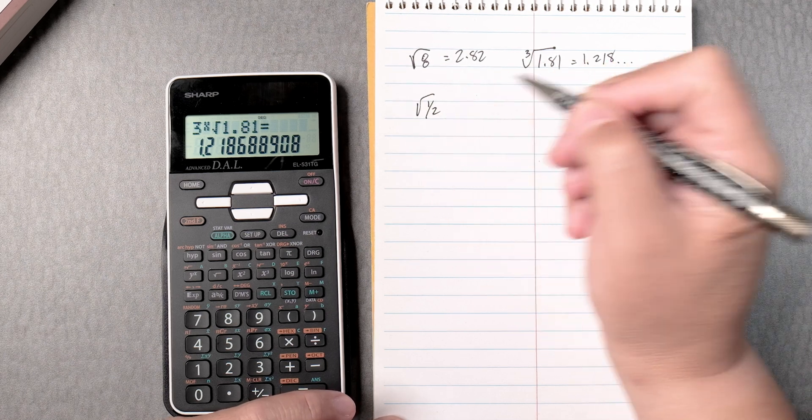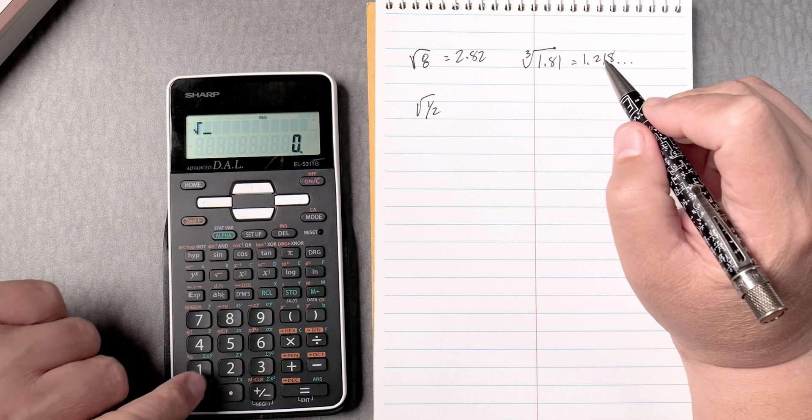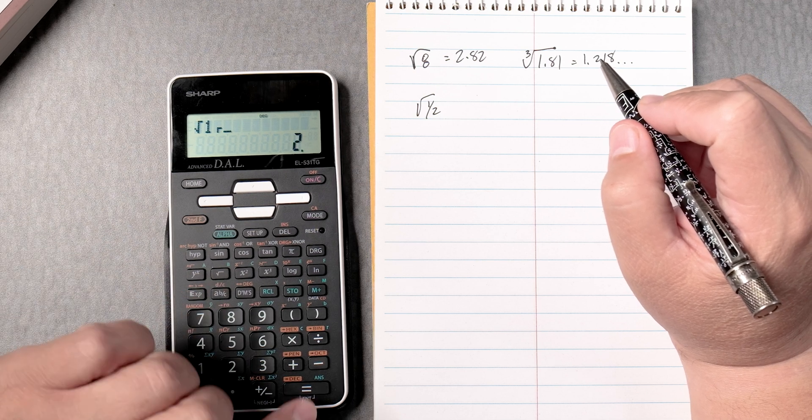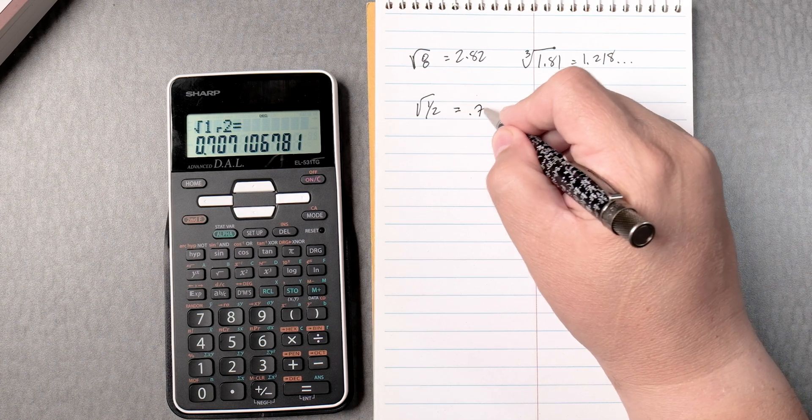Square root of half. So we take the square root and we say 1abc2. We press equals and then it gives us 0.707.